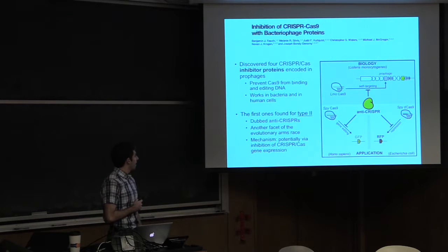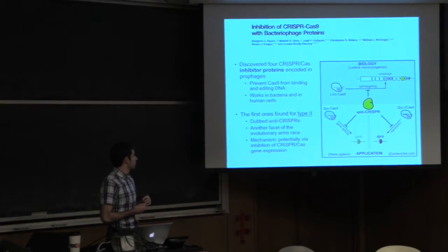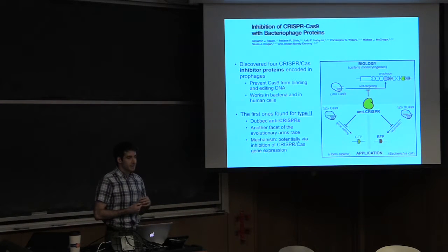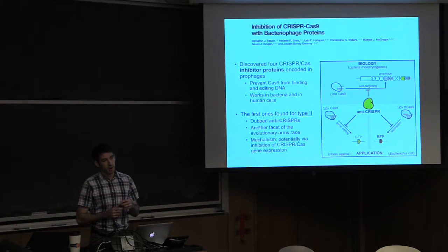And what happens is that these are encoded in prophages, and they prevent the Cas9 from binding any DNA. And the researchers found that they can take these in phages, it works well on bacteria, it works well on humans.